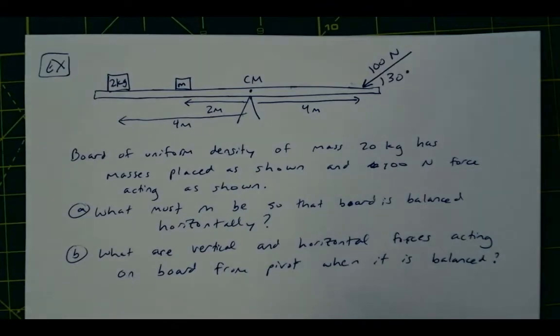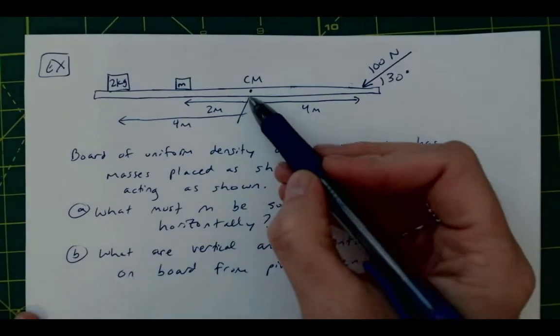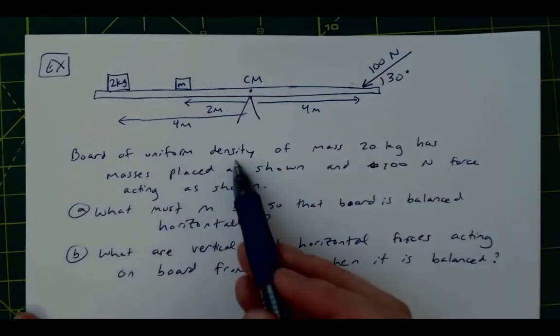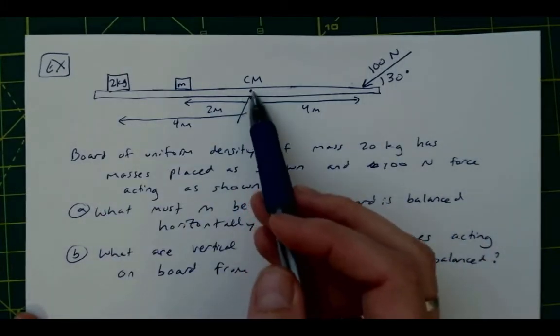Alright, so for an example, let's say that we just have a beam, sort of like a seesaw, that's balanced here at this pivot point. And you're told that the board is a uniform density. So that lets you know that the center of mass is right in the middle.